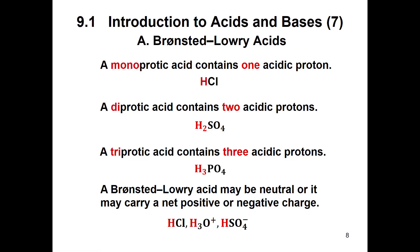We can also classify Bronsted-Lowry acids by how many hydrogens or how many protons they can produce. Monoprotic has one proton or one acidic proton, diprotic has two, and triprotic or polyprotic has three or more.